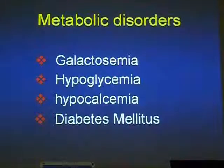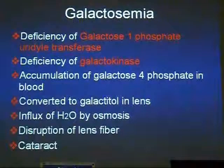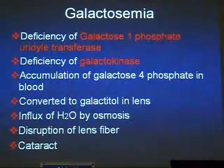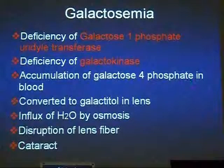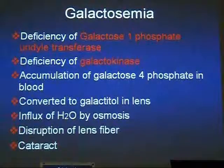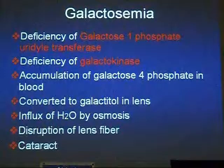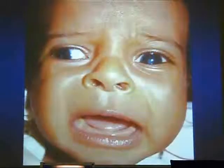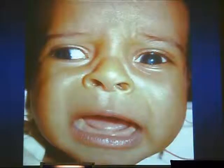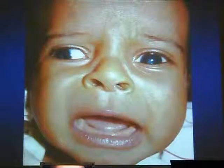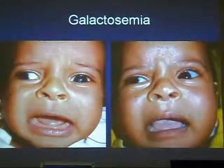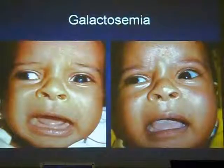Metabolic disorders causing congenital cataract include galactosemia, hypoglycemia or diabetes, and hypocalcemia. In galactosemia, there is deficiency in galactose-1-phosphate uridyltransferase or galactokinase enzymes, leading to accumulation of galactose-1-phosphate in the blood, which is converted to galactitol inside the lens. The osmotic pressure increases inside the lens, causing influx of water, destruction of lens fibers, and finally cataract. Importantly, if you give the baby a galactose-free diet, this cataract may be reversible — after treatment, the cataract decreases in density and may even disappear, so early surgery may not be necessary.